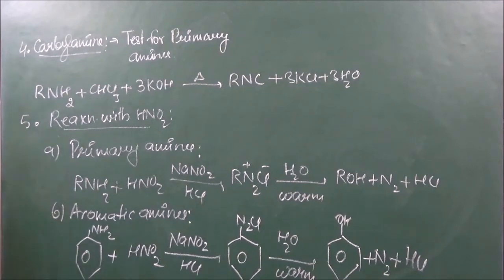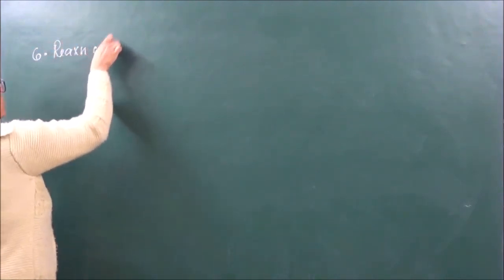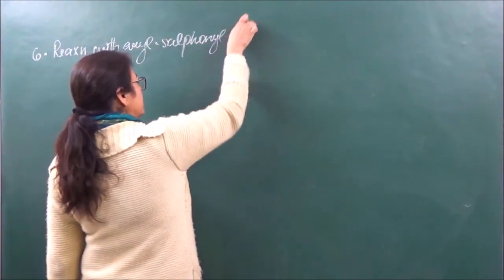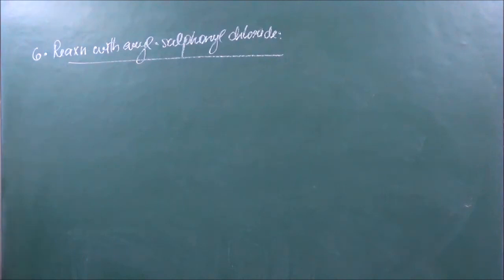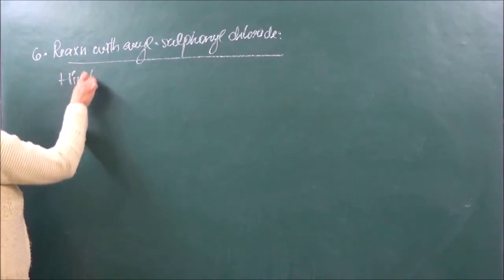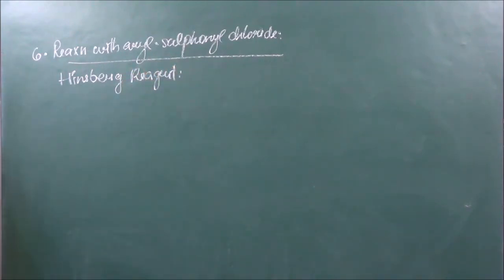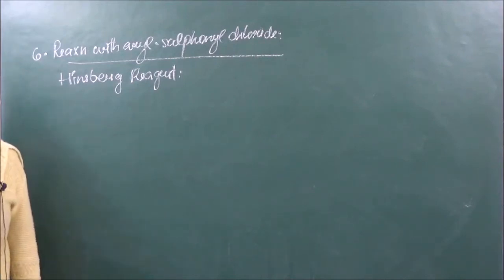The sixth reaction is reaction with aryl sulfonyl chloride, which is the Hinsberg reagent. Three types of amines react differently with this reagent. Tertiary amine does not give this reaction. Primary and secondary amines both react, but in both cases the products are going to be different. So this can be used as a distinction test between primary, secondary, and tertiary amines.